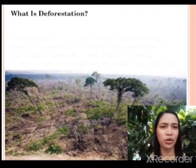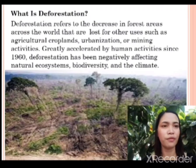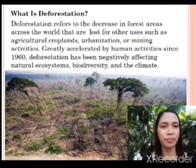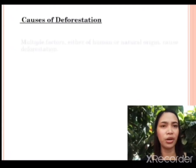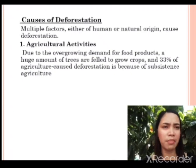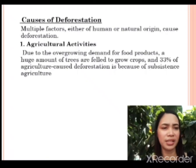So, what is deforestation? Deforestation refers to the decrease in forest areas across the world that are lost for other uses, such as agricultural crop plants, urbanization, or mining activities. Greatly accelerated by human activities since 1960, deforestation has been negatively affecting natural ecosystems, biodiversity, and the climate. Causes of deforestation include multiple factors, either of human or natural origin. Agricultural activities: due to the overgrowing demand for food products, a huge amount of trees are felled to grow crops, and 33% of agricultural cost deforestation is because of subsistence agriculture.